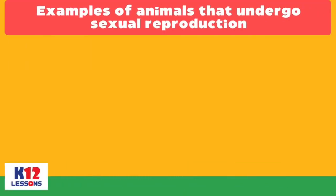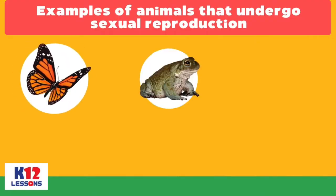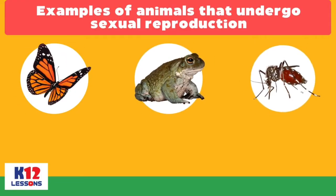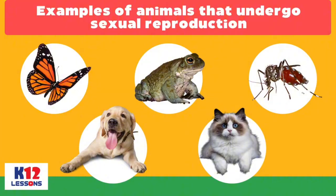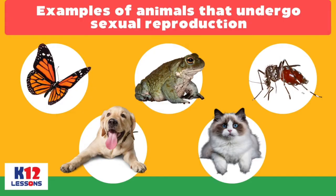Examples of animals that undergo sexual reproduction are butterflies, frogs, mosquitoes, dogs, and cats. Though all of them reproduce sexually, they have different modes of reproduction. The following are their modes of reproduction.